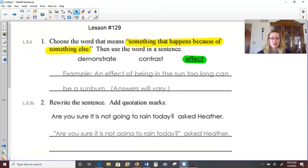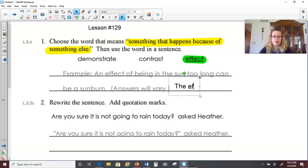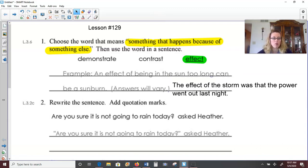So the effect of being in the sun too long is that you can get sunburn. I might say the effect of the storm, where are my letters at? Try typing again. The effect of the storm was that the power went out last night. So because of the storm, the power went out. So see if you can come up with a sentence of your own for effect, or you can use one of the examples given here.